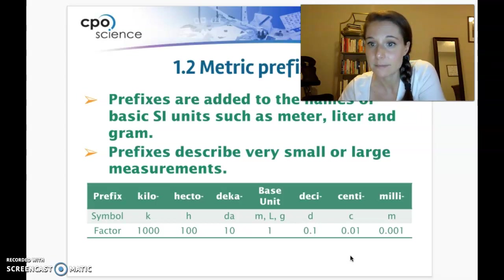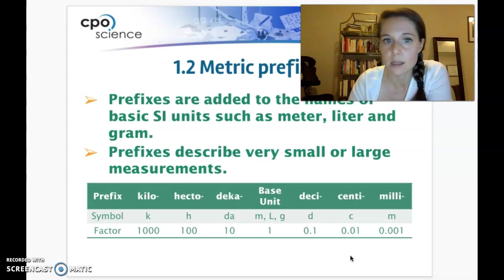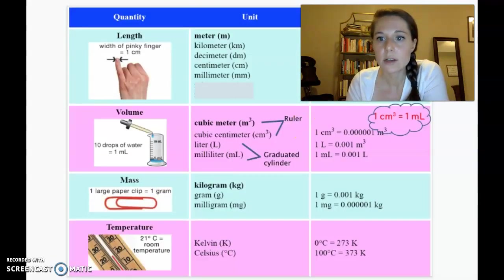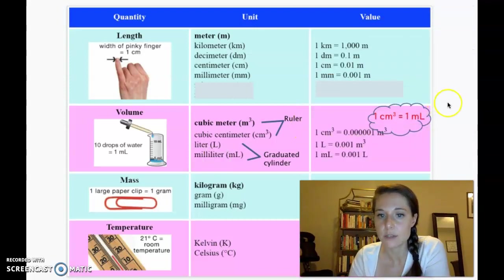If I were to ask you what is the abbreviation for centimeter, then you would write lowercase c, lowercase m. So the prefix always goes first and then the unit goes after. All right, so let's take a look at some ways to estimate these units because these are not units that we use often.